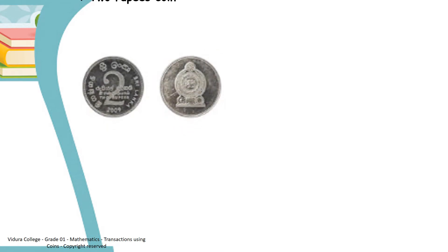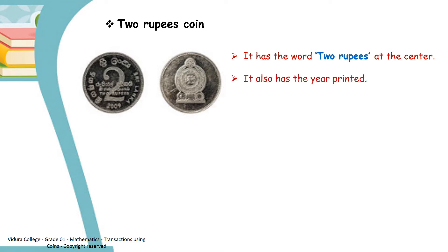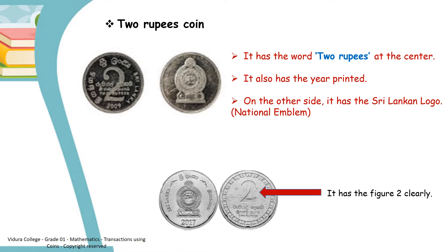Now, look at this coin. It's the two rupees coin. It has the word two rupees at the center. It also has the ear printed. On the other side, it has the Sri Lankan logo. It also has the figure two clearly.